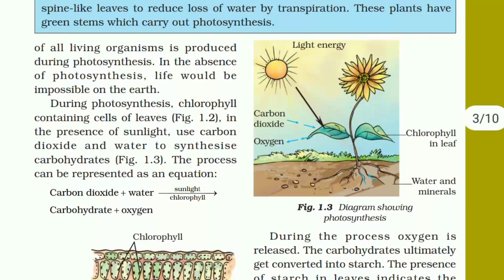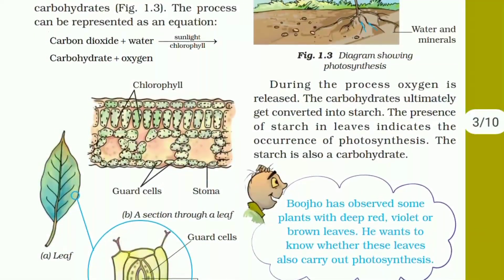This process can be represented as an equation. If you remember this equation, you are remembering the process of photosynthesis — it is important. Carbon dioxide plus water, in the presence of sunlight and chlorophyll, gives carbohydrates plus oxygen. So the input gas is carbon dioxide and the output gas is oxygen. This is the process of photosynthesis.